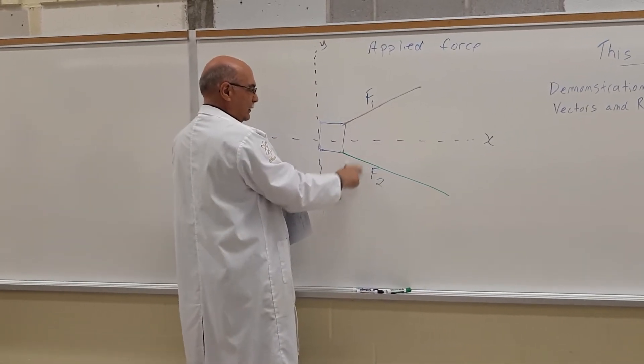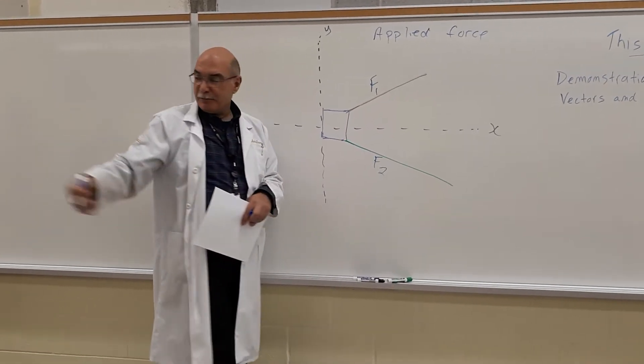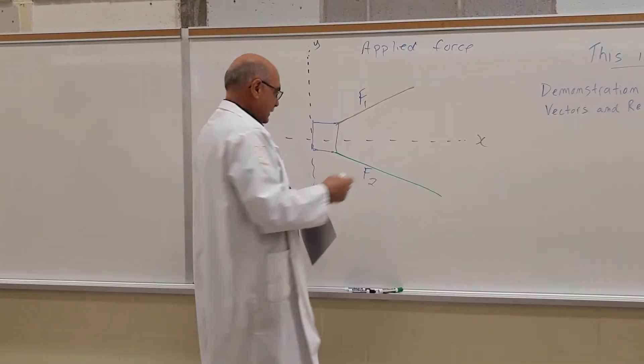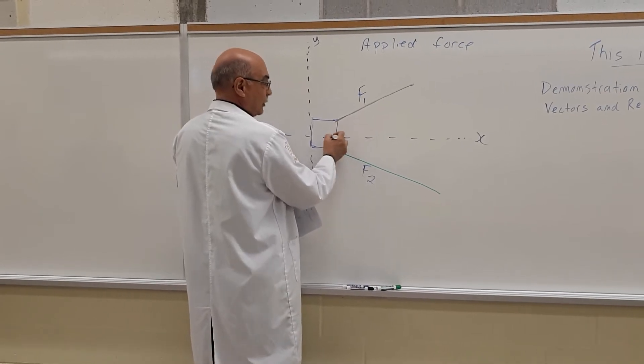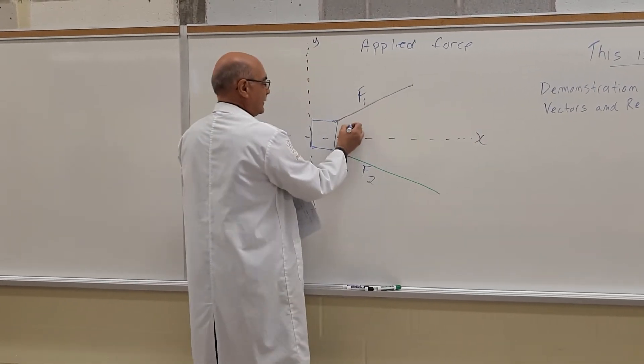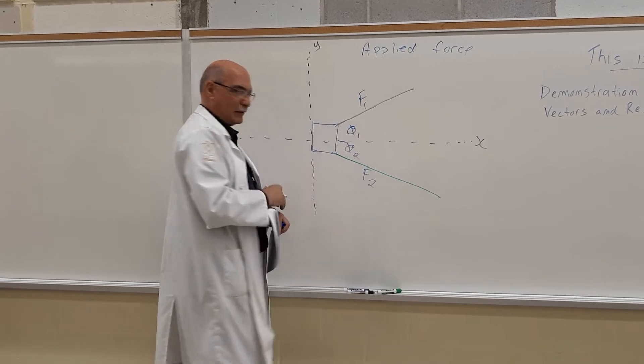There's also an angle between them. Again, we could have measured the angles between the two ropes. And in our case, we'll just call them, with respect to the X-axis, angle theta 1 and angle theta 2.